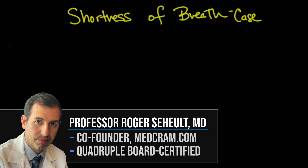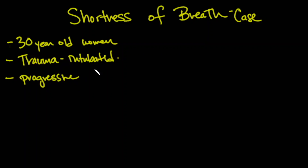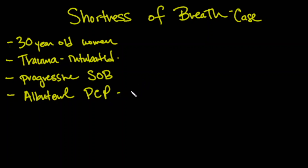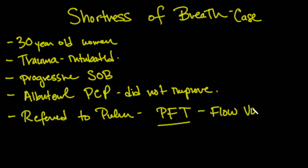Welcome to another MedCram video. Today we're going to talk about a special case of shortness of breath. Our case is a 30-year-old woman who was about a month ago in a car accident that required mechanical ventilation, and she was discharged from the hospital. After discharge, she developed progressive shortness of breath, and she was given albuterol, which is a rescue inhaler, by her primary care physician, but it just did not improve. So she was referred to our pulmonology group, and we ordered a pulmonary function test, which includes a flow-volume loop.